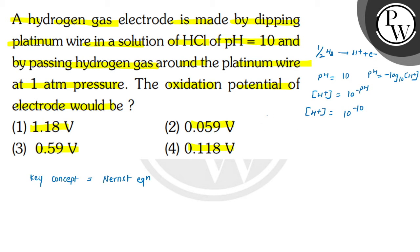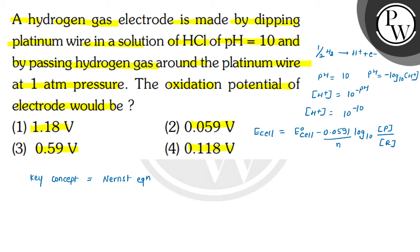Now we can use the Nernst equation: E_cell = E⁰_cell minus (0.0591 / n) × log₁₀(products / reactants). For the hydrogen gas electrode, the value of the standard electrode potential is 0, so E⁰_cell = 0.